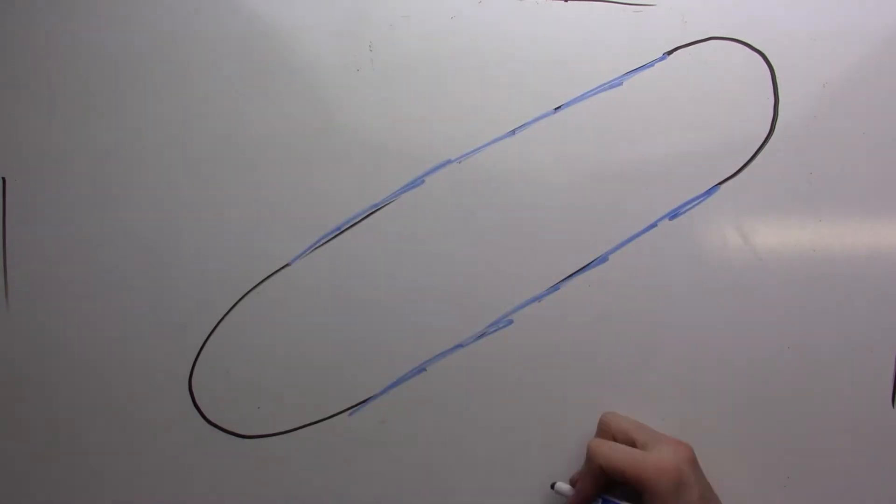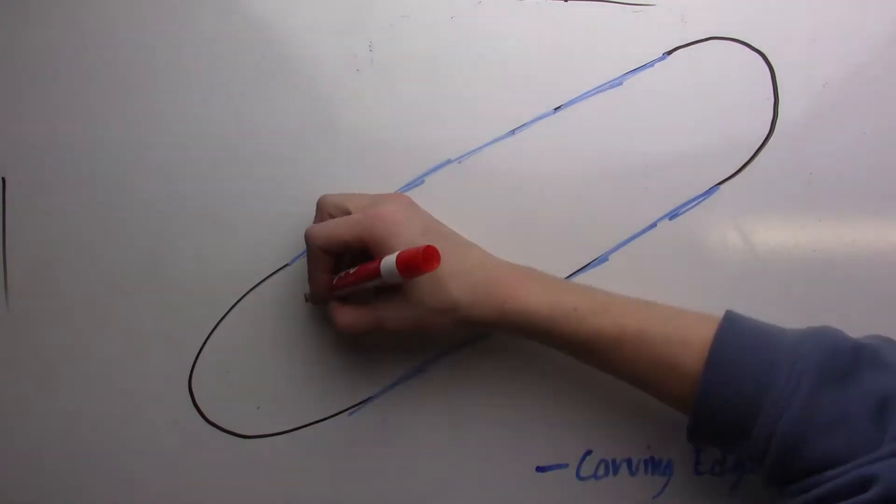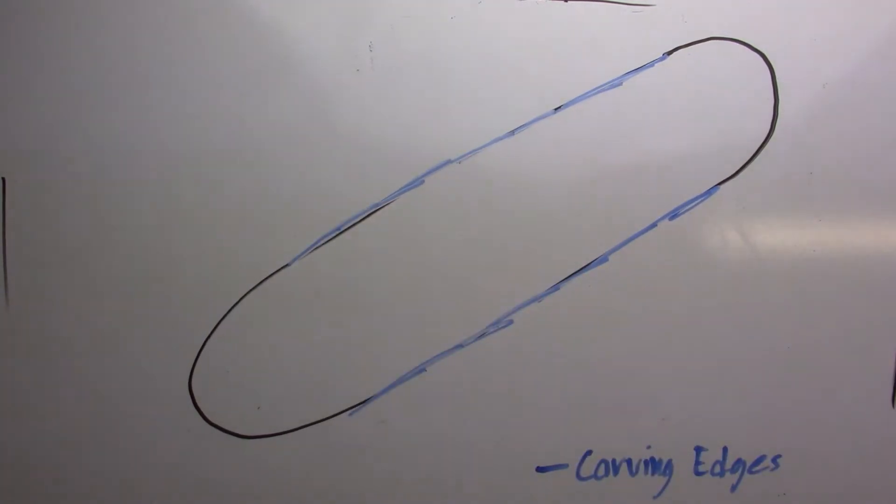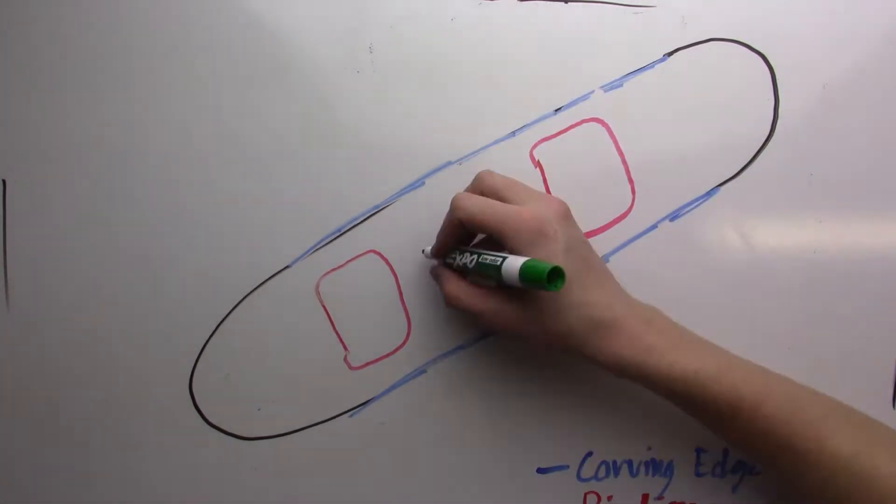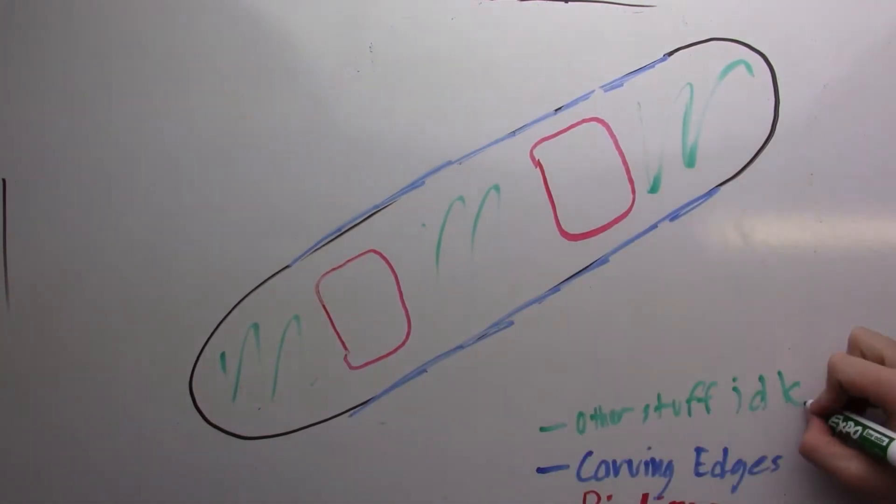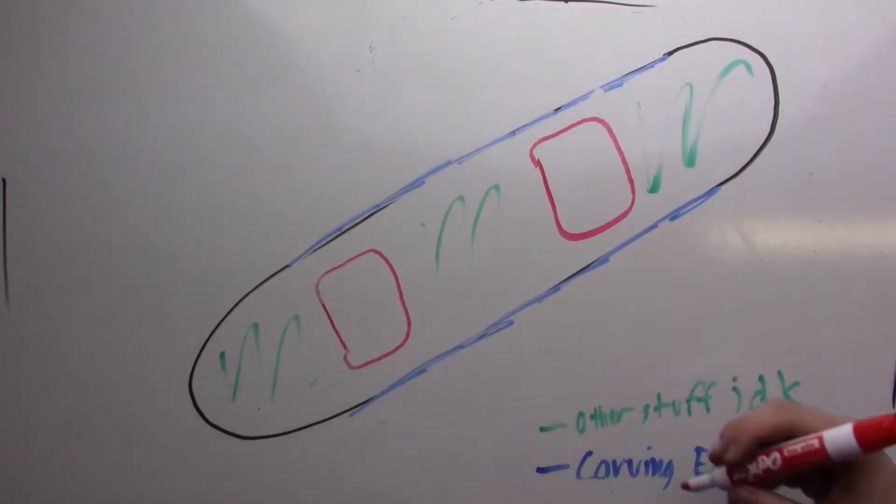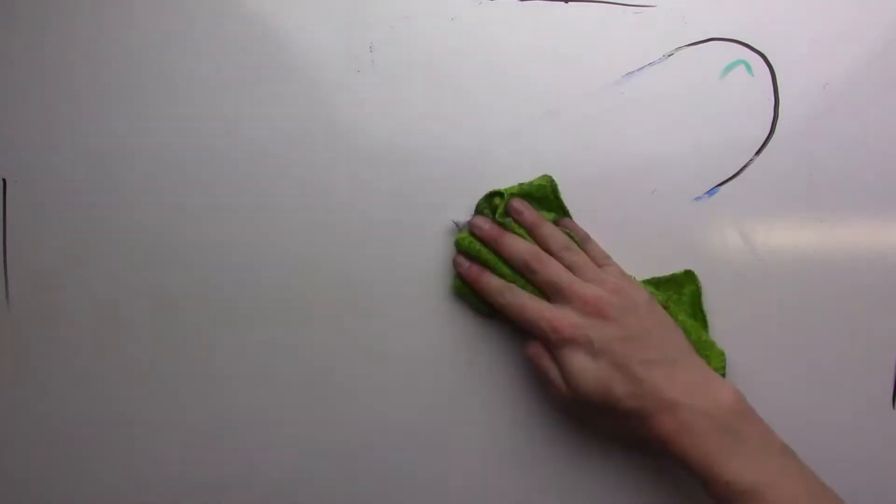Alright, let's talk about the snowboard itself. There are these carving edges, marked in red, that are used to steer and control your speed. These two foot contraptions, marked in blue, are called bindings. They do the job of keeping your snowboard boots pressed snugly against your board so you can maneuver it.